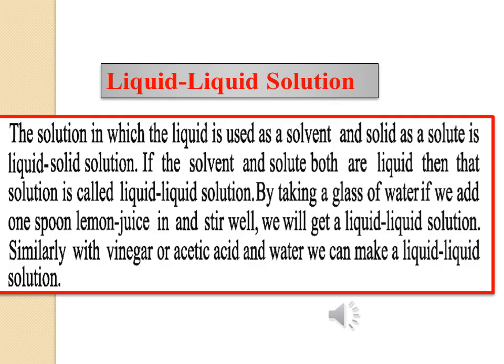Now, liquid-liquid solution. A solution in which the liquid is used as a solvent and solid as a solute is called a liquid-solid solution. If both the solvent and solute are liquid, then that solution is called a liquid-liquid solution. For example, if we add one spoon of lemon juice to a glass of water and stir well, we get a liquid-liquid solution. Similarly, vinegar or acetic acid mixed with water is also a liquid-liquid solution.